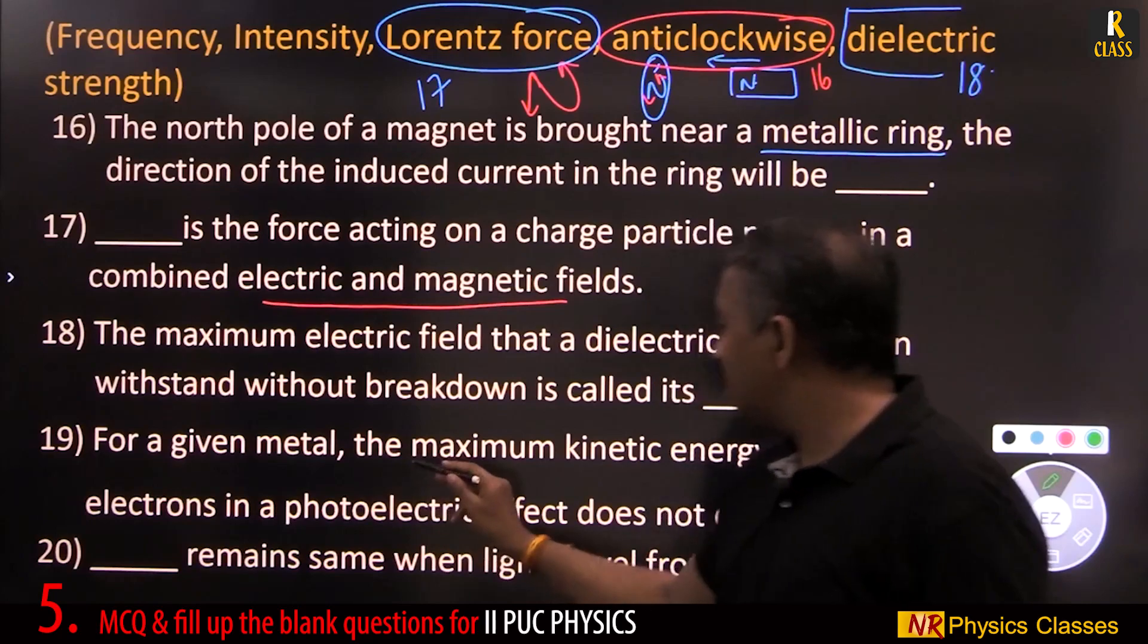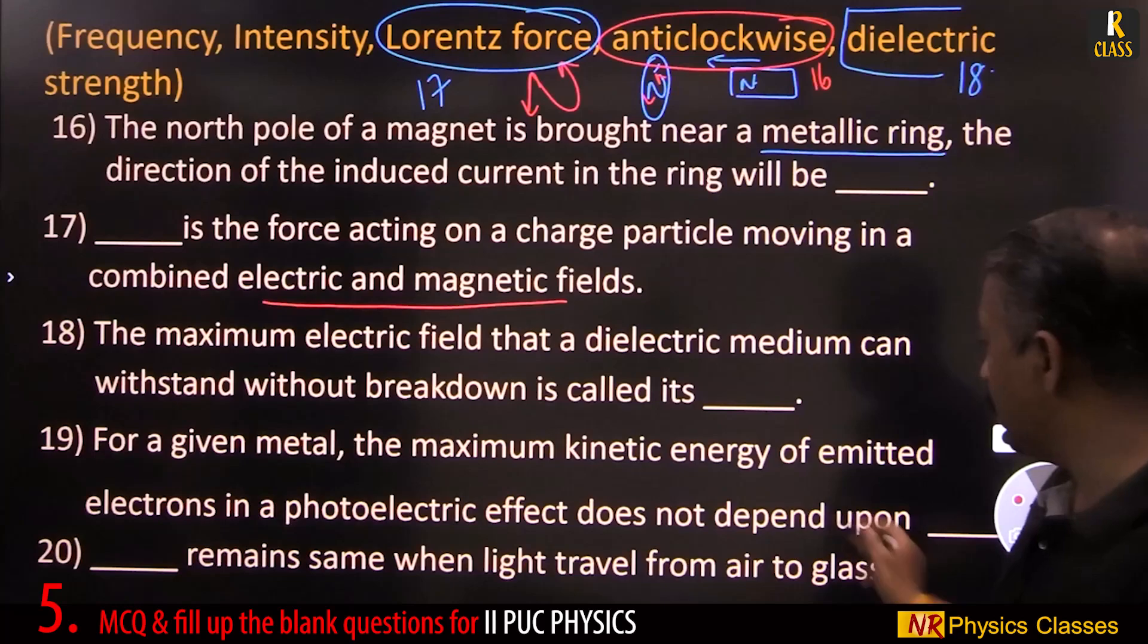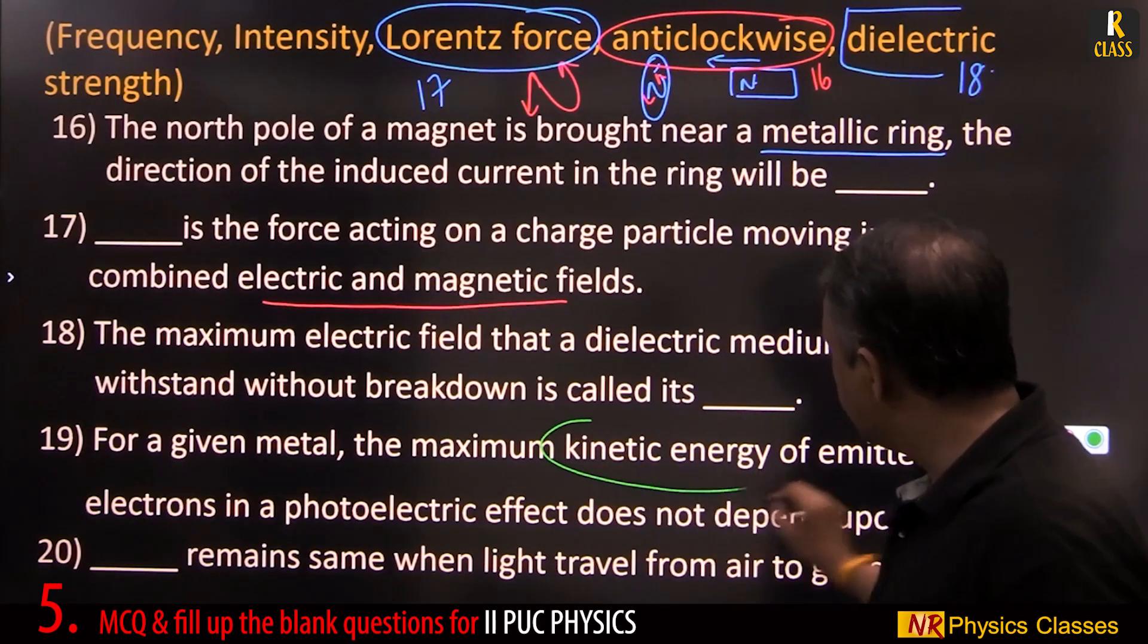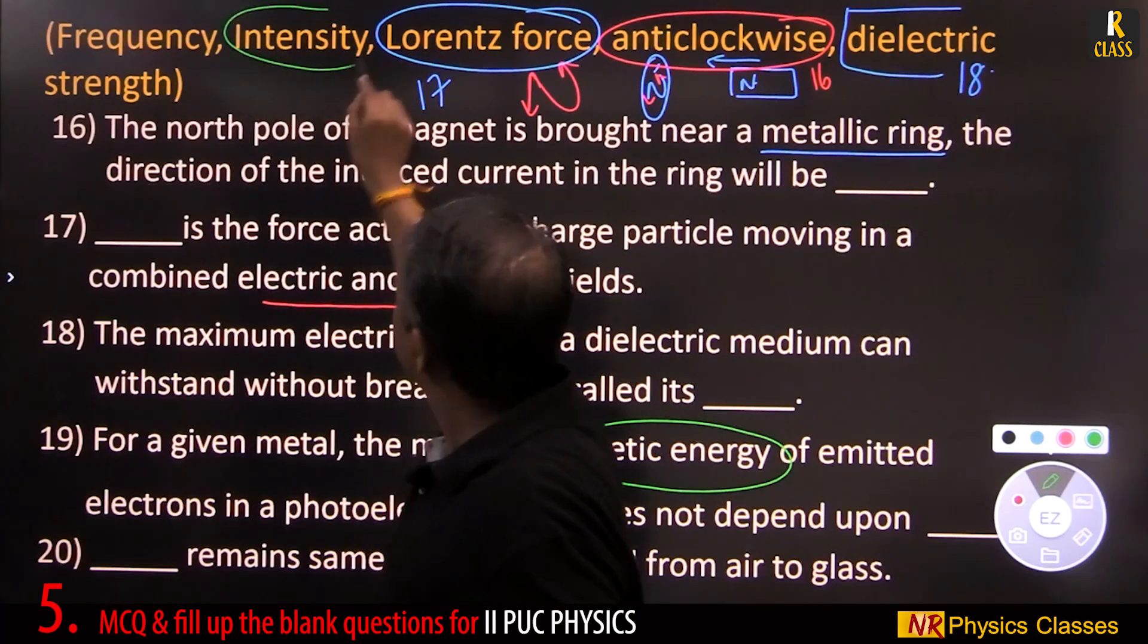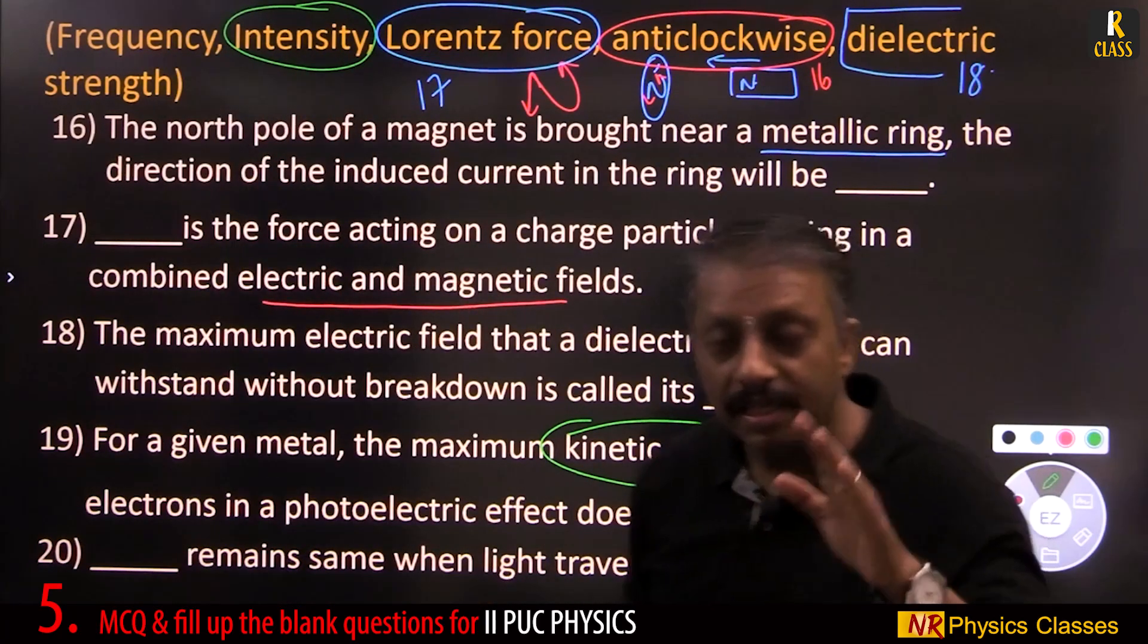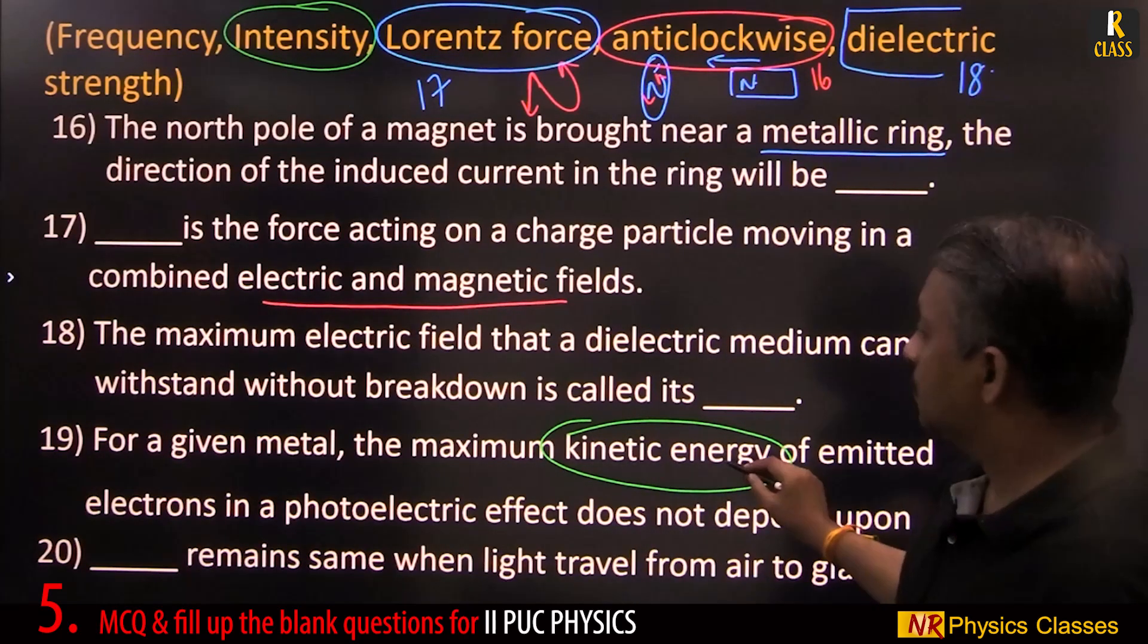For a given metal, the maximum kinetic energy of emitted electrons in a photoelectric effect does not depend on intensity. Intensity increases current but not kinetic energy.